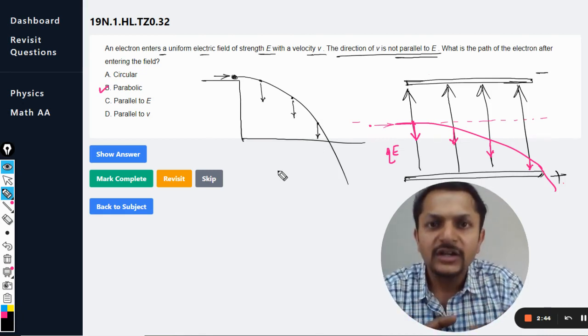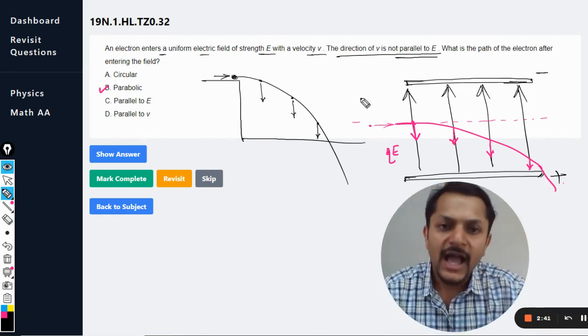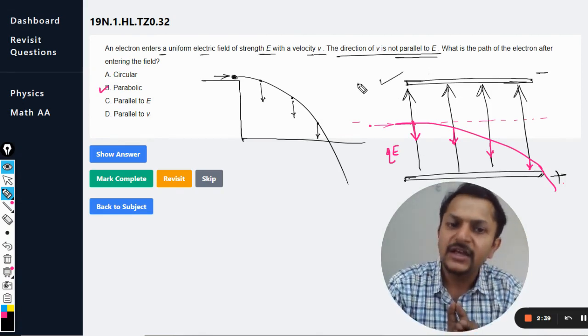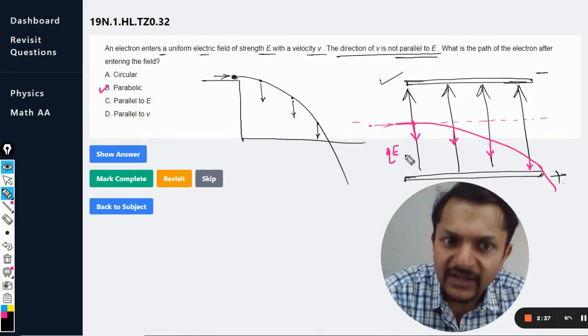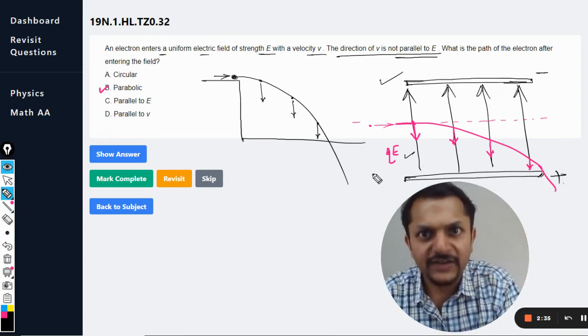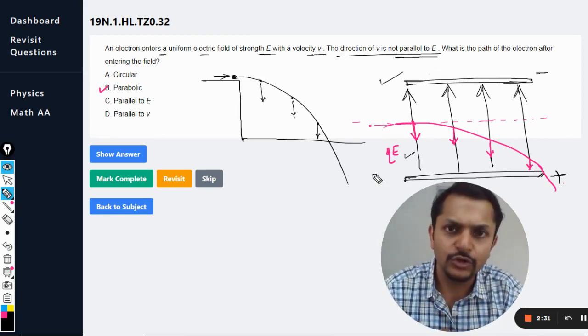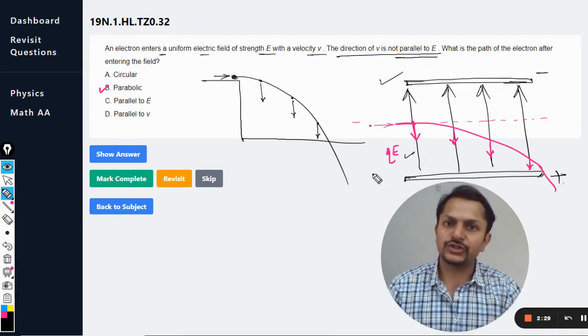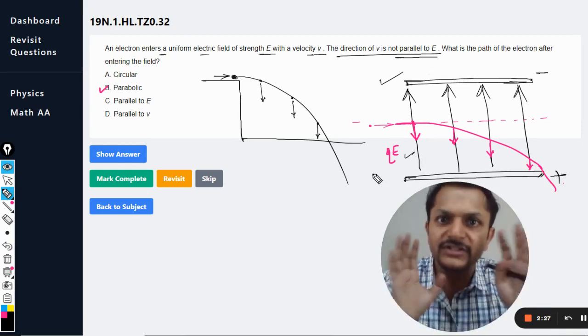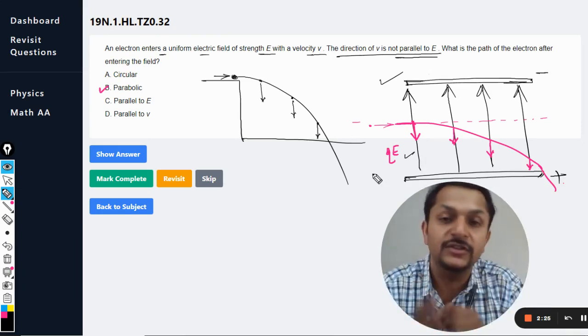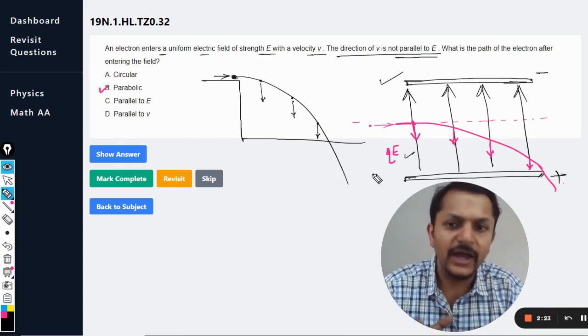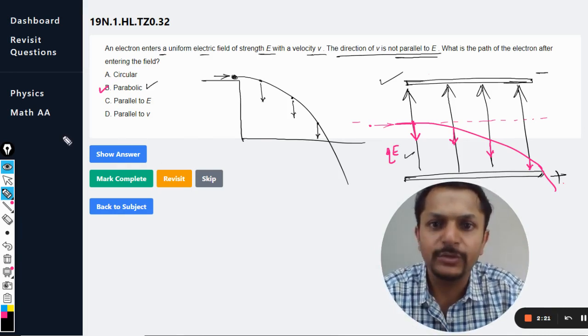The trajectory of the ball is parabolic, and this is absolutely the same case. Because instead of weight, it is acted by the electrostatic force. But the characteristic of force is the same. The magnitude of the force is not changing. The direction is always downwards, not perpendicular to the velocity vector. That is why it is definitely going to be parabolic.